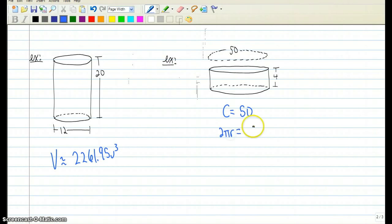but we can set the 50 equal to 2 pi r. Do a little bit of algebra, divide both sides by 2 pi. So the radius is 50 over 2 pi, which would simplify down to 25 over pi. So that is the radius of that circular base.